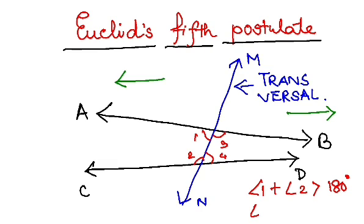And similarly I'm going to check the sum of angle three and angle four. I am going to check whether this is more than 180 or less than 180. So the fifth postulate says where the sum of the angles is less than 180, on that side only the two lines are going to meet.